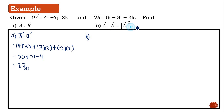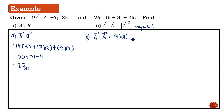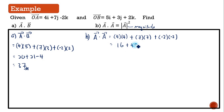We have to prove that vector a dot vector a equal to magnitude of a squared. So vector a dot vector a equal to: coefficient of i is 4 multiplied by 4, plus coefficient of j is 7 multiplied by 7, and the last one k is negative 2 multiplied by negative 2. So you will get 16 plus 49 plus 4, so the answer is 69.